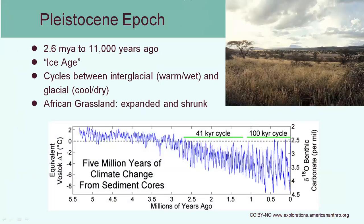So what happened during this time period that caused this kind of evolution? There was a mini ice age. And during this ice age, there were cycles between warm, wet and cool, dry environments. One of the main things that happened with the bipedalism we talked about previously was that the grassland is where these animals were living rather than the forests of their ancestors. And so during this time period, there was a lot of expansion as well as shrinking of the grasslands, so the animals had to be quite good at adapting to these changes.